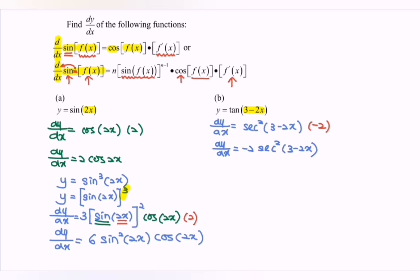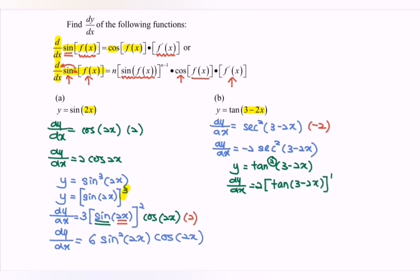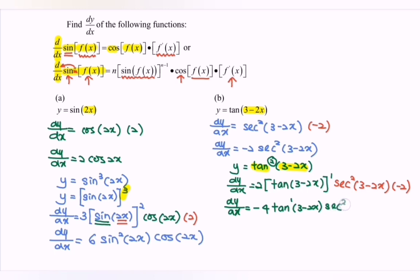For the next example, let's say we have y equals tan squared bracket (3 minus 2x). Differentiate with respect to x. We have to focus on the power, so we have 2 bracket tan bracket (3 minus 2x), and 2 minus 1 becomes 1. Continue — focus on the internal function, which is tan. If we differentiate the tan, we have sec squared bracket (3 minus 2x). Focus on the internal function 3 minus 2x, so we get negative 2. Rewrite: dy/dx equals negative 4, multiplied by tan to the power 1 bracket (3 minus 2x), multiplied by sec squared bracket (3 minus 2x).